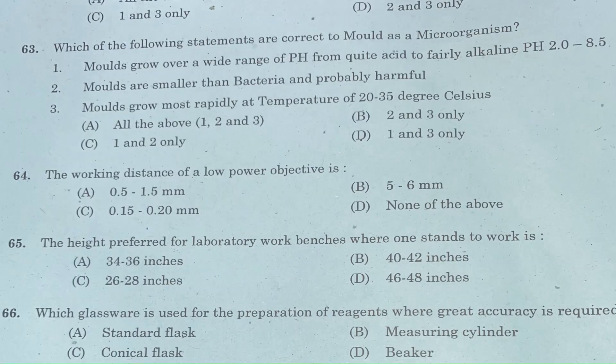Question 63: Which of the following statements are correct for mold as a microorganism? Statement 1: molds grow over a wide range of pH from quite acid to fairly alkaline pH, i.e., 2 to 8.5. Statement 2: molds are smaller than bacteria and probably harmful. Statement 3: molds grow most rapidly at temperatures of 20 to 35 degrees Celsius. Option A: all of the above. Option B: 2 and 3 only. Option C: 1 and 2 only. Option D: 1 and 3 only. Answer is Option D, 1 and 3 only.